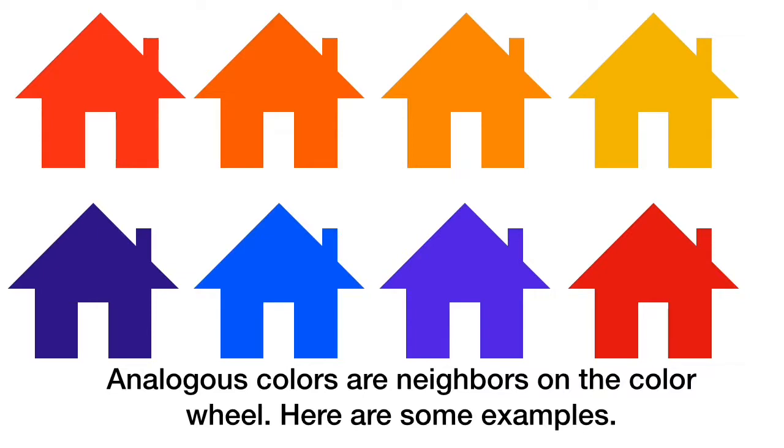Sometimes you might only use three analogous colors or you might use four. But you have to look at the color wheel to pick them. Analogous colors are not across from each other. Those are complementary. So don't get confused and get mixed up on that. Analogous colors have to be next door neighbors.